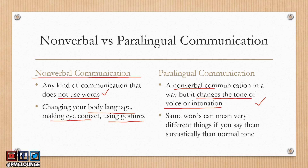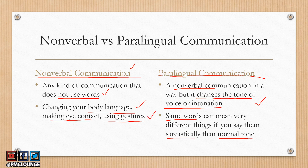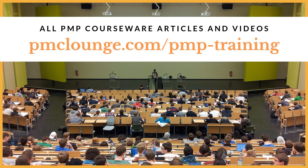Paralingual communication, on the other hand, is a type of non-verbal communication, but it involves changing the tone of your voice or intonation. You are speaking the same words, but in a different tone — for example, saying something sarcastically means it may convey a totally different meaning than saying it in a normal tone. So paralingual communication is all about the tone of your voice, while non-verbal communication is about communicating without words — through body language, gestures, eye contact, and so on. I hope this was clear.